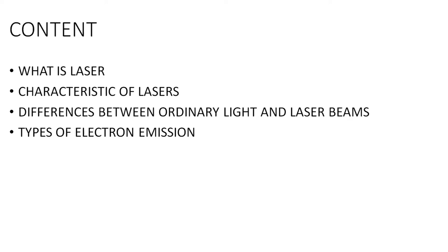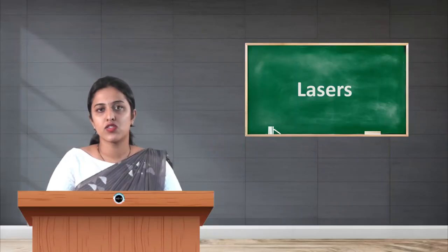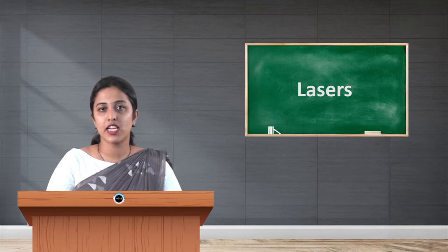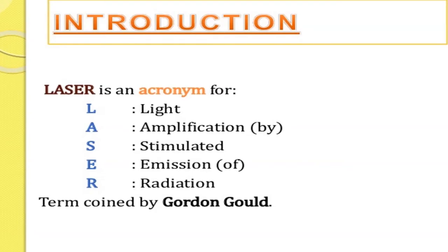The content of this topic covers: what is laser, characteristics of lasers, the differences between ordinary light and laser beams, and the types of electron emission. Laser is a device which is used to produce light by optical amplification based on stimulated emission of electromagnetic radiation — that is, Light Amplification by Stimulated Emission of Radiation.